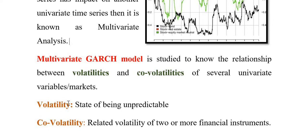Hence, the multivariate GARCH model is studied to know the relationship between volatilities and co-volatilities of several univariate variables or several univariate markets. Volatility means the state of being unpredictable — in finance, it refers to uncertainty about the future price of a commodity, share, or any financial instrument. In multivariate analysis, we are learning whether a change in one market is going to affect the change in another market — that is why we study volatility and co-volatility. Co-volatility means the related volatility of two or more financial instruments, whether their volatilities move in the same direction or one affects the other.